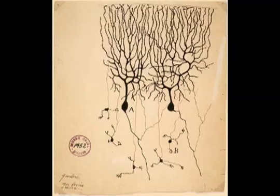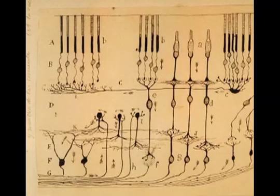Santiago Ramón y Cajal recognized that neurons, like these Purkinje cells in the cerebellum, are highly polarized structures with a dendritic tree on one side and an axon on the other. In the retina, Cajal used this anatomical polarization to trace the flow of information from apical to basal, in the photoreceptors,